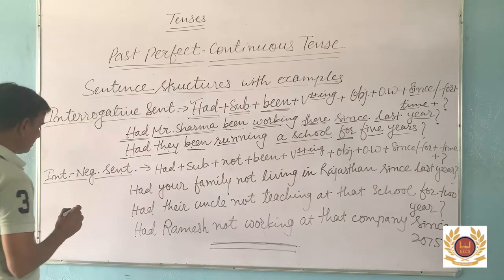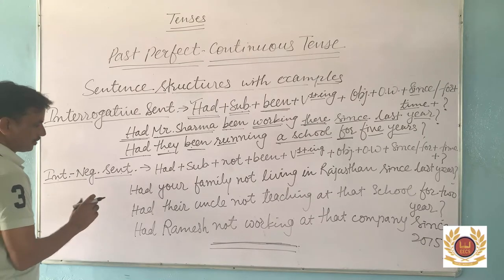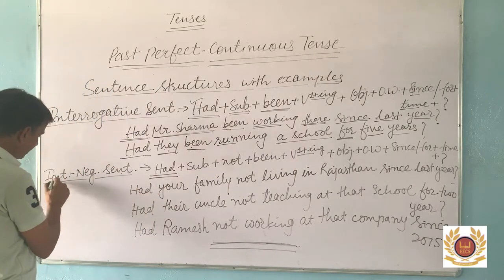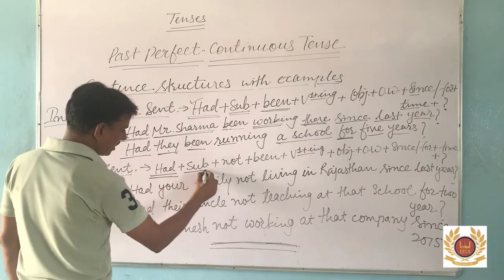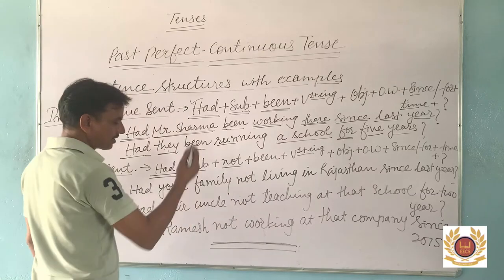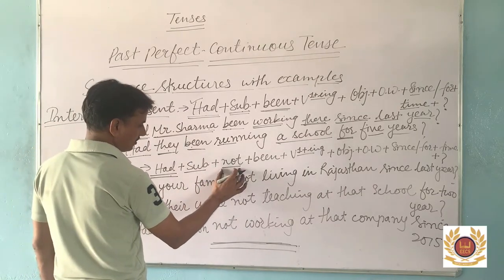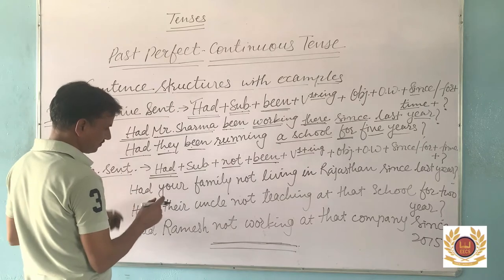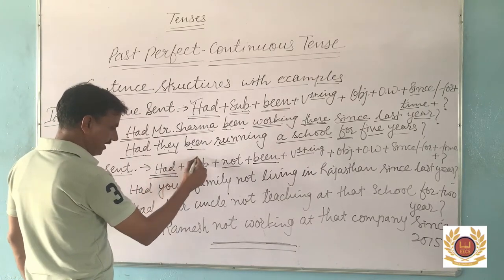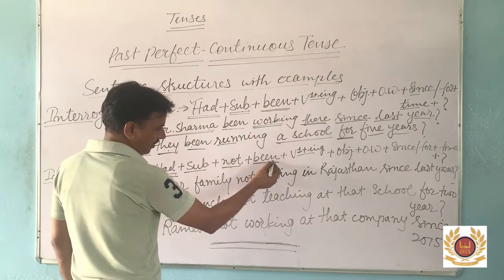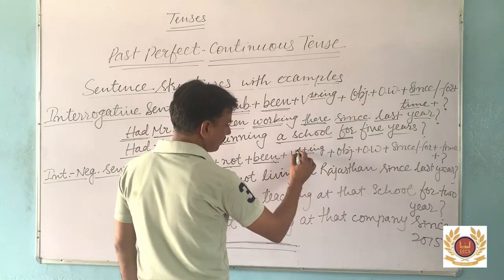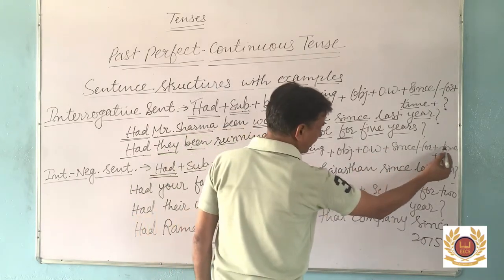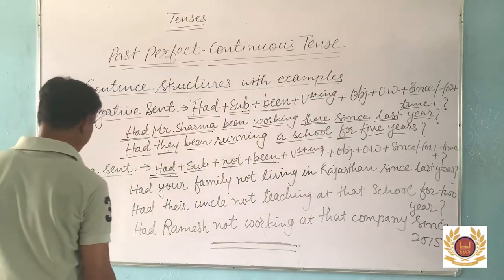Now the last sentence structure — the interrogative-negative sentence. In an interrogative-negative sentence, there is both negativity and an interrogative form. We start with 'had', then our subject, then 'not', then 'been'. Just like the negative sentence, we use 'not' after the subject. The remaining structure is the same: first form of verb with '-ing', object, other words if any, 'since' or 'for' plus time, and a question mark at last.